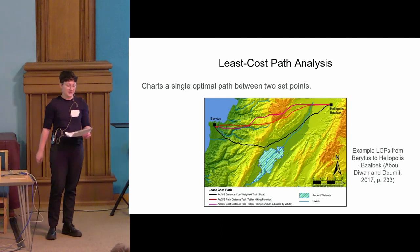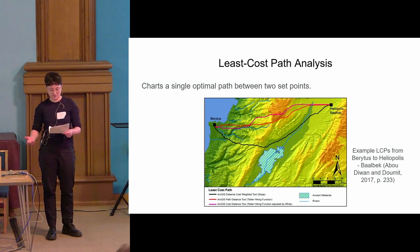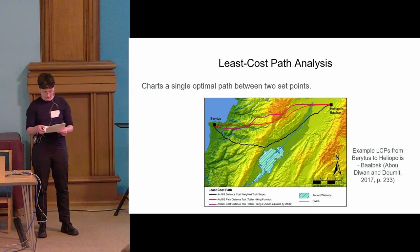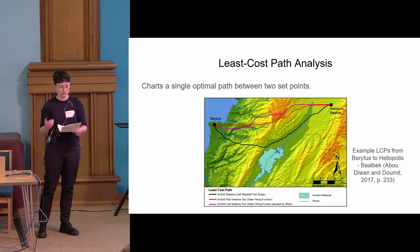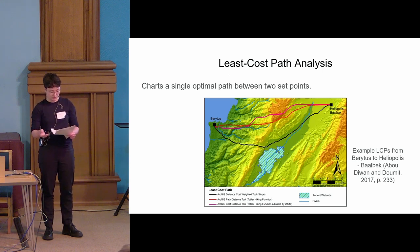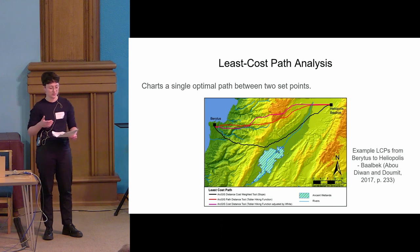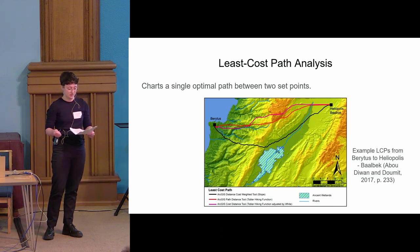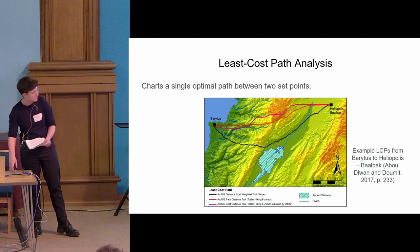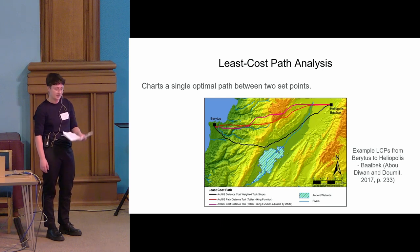GIS cost surface analysis has become the standard method for modeling past mobility over land and sea. With the widespread availability of environmental data, cost surface analysis is a relatively simple and efficient method for producing maps of ancient routes and movement patterns based on the restraints of the physical environment. This is more efficient than trying to predict movement based on social, economic, or cultural factors, as it isn't easy to digitally model human choice. The most popular form is least cost path analysis.